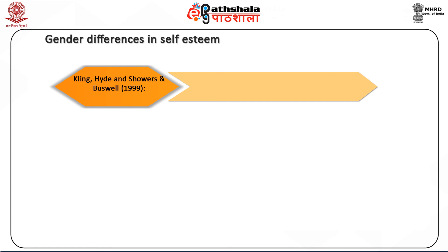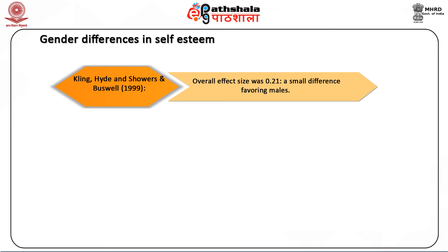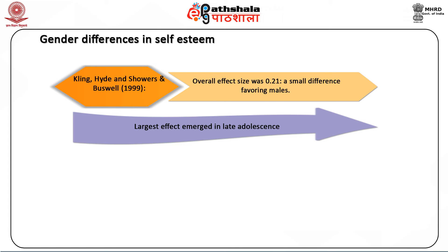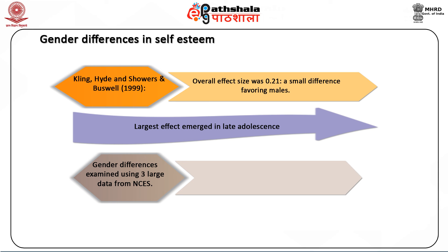Kling, Hyde, Showers and Buswell in 1999 conducted an analysis to examine gender differences in global self-esteem. A computerized literature search gave 216 effect sizes, with an overall effect size of 0.21 — a small difference favoring males. The largest effect emerged in late adolescence. A second analysis using three large nationally representative data sets from the National Center for Education Statistics also indicated higher male self-esteem. Thus, the two analyses provide evidence that males score higher on standard measures of global self-esteem than females, though the difference is small.